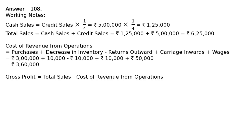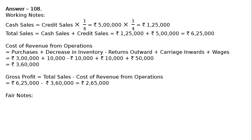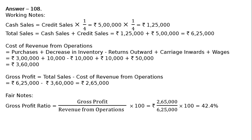Gross profit is equal to total sales minus cost of revenue from operations. That is rupees six lakh twenty-five thousand minus rupees three lakh sixty thousand, which equals rupees two lakh sixty-five thousand. From the working notes, we have obtained all the values needed.